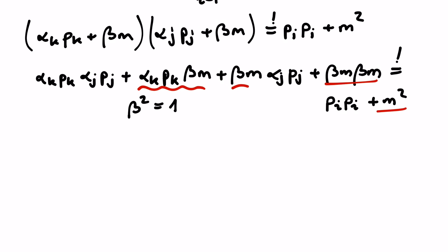Next, we look at terms with only one momentum. This means these two terms on the left and nothing on the right. So we have alpha k pk beta m plus beta m alpha j pj has to vanish.